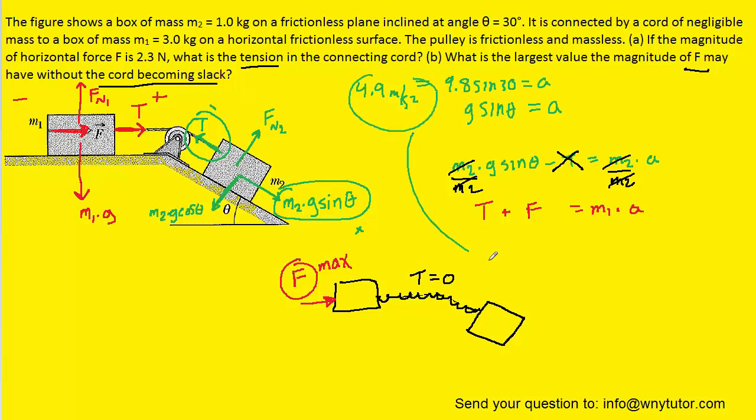And we can take that acceleration and plug it into the red equation. That's going to allow us to solve for the force F. Remember that the tension has gone to zero, so we can eliminate that from the second equation as well, just like we did in the first equation. And then we can see that the force F is simply equal to M1 times the acceleration. So we'll punch in M1 and then this acceleration. And when we compute that, we get about 14.7 newtons, which can be rounded to 15 newtons. And so this is the correct answer to part B.